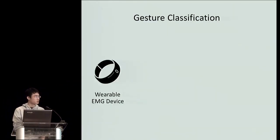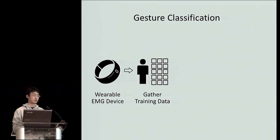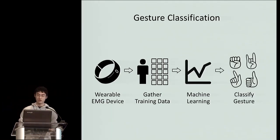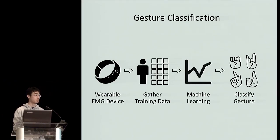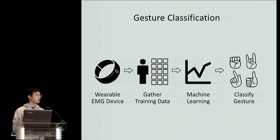To classify thumb gestures, these devices typically start by gathering lots of training data, which are previously recorded data samples of the users performing the various gestures. Then, machine learning or some other statistical method is used to construct a model of the problem using the training data, which is then used to classify the EMG signals incoming to the EMG device into the corresponding gesture. One of the keys towards such an approach of classifying gestures is the training data.